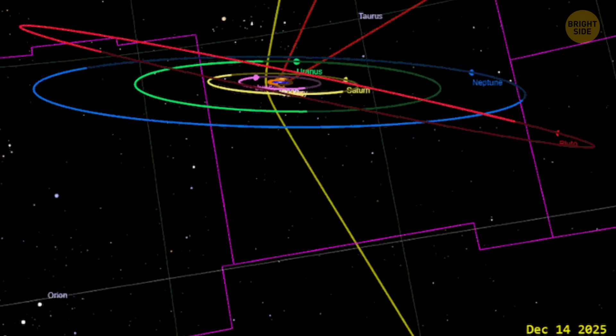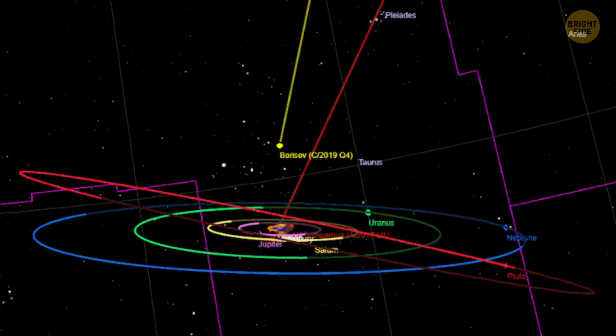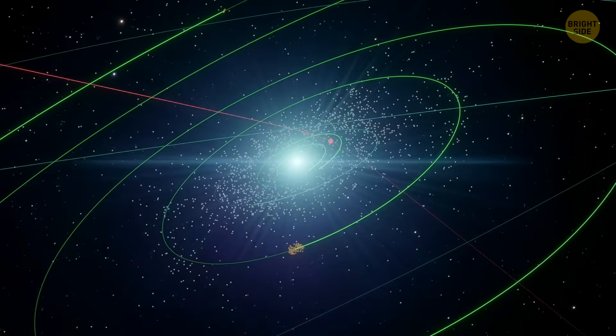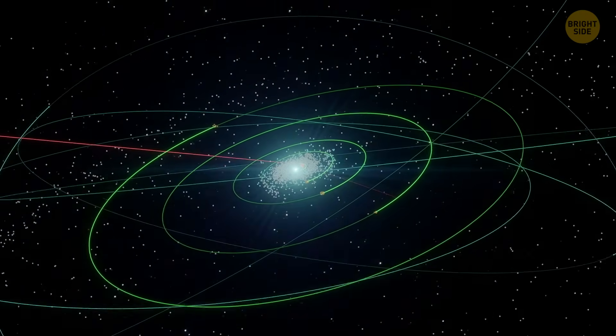Now, scientists check this by basically rewinding the object's path, sending it all the way back to about 1,000 AU. That's 1,000 times farther than the Earth is from the Sun. At that huge distance, the planets can't mess with its motion anymore.